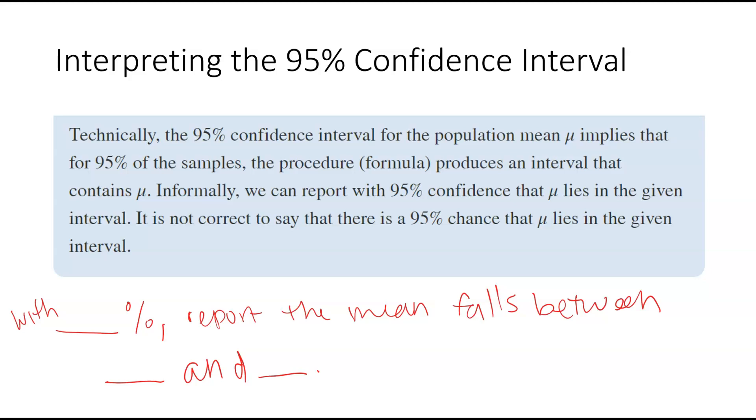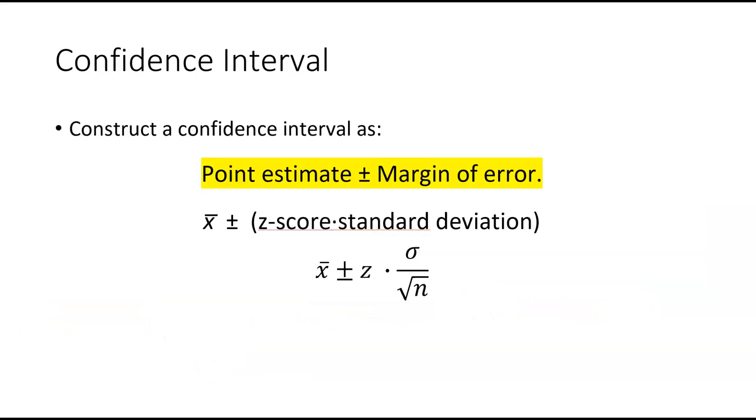With whatever percent confidence, we can report that the mean falls between those two values. To construct a confidence interval for the mean when sigma is known, we are going to need the sample mean, the Z-score, sigma, and n. And remember that this right here is our margin of error. So if the directions ask you just for the margin of error, you just have to calculate that.